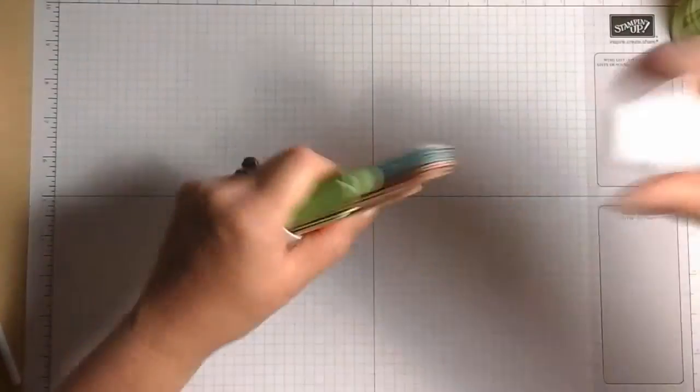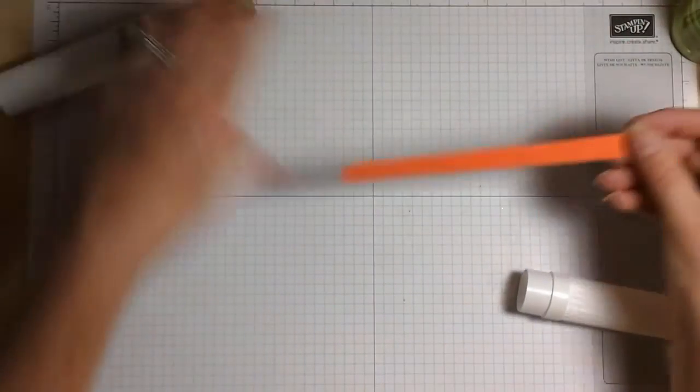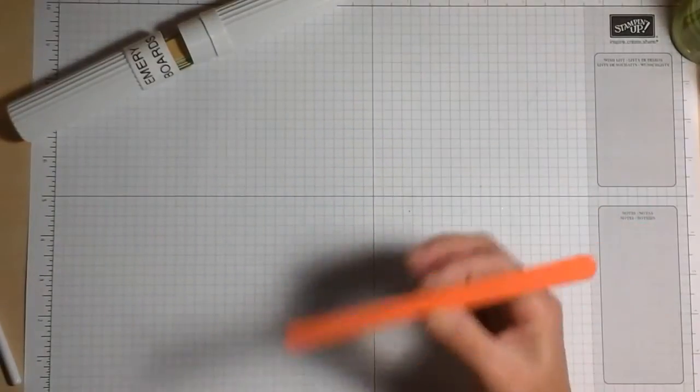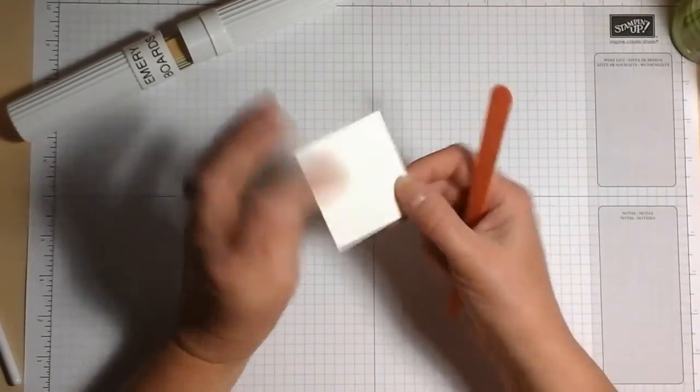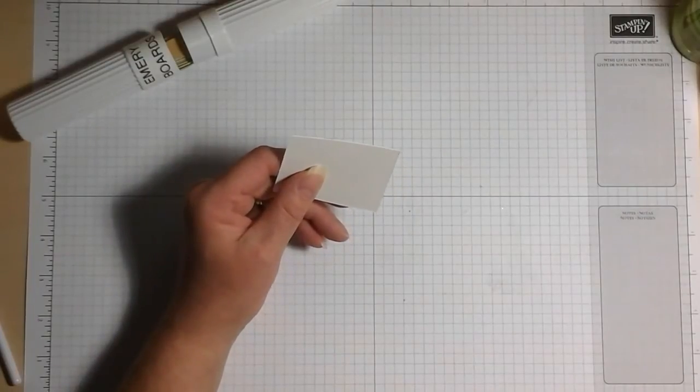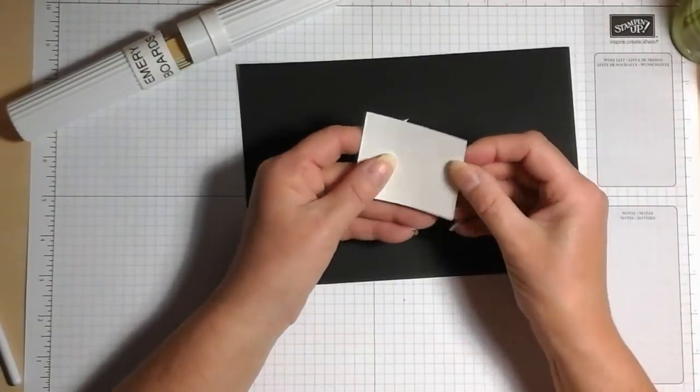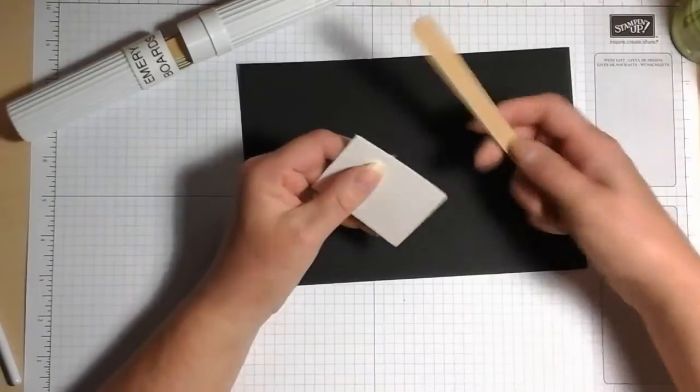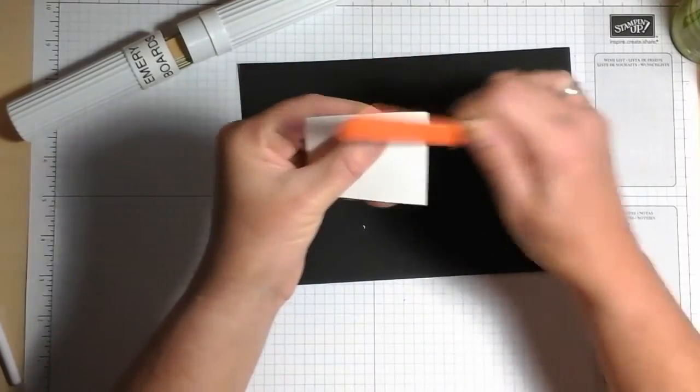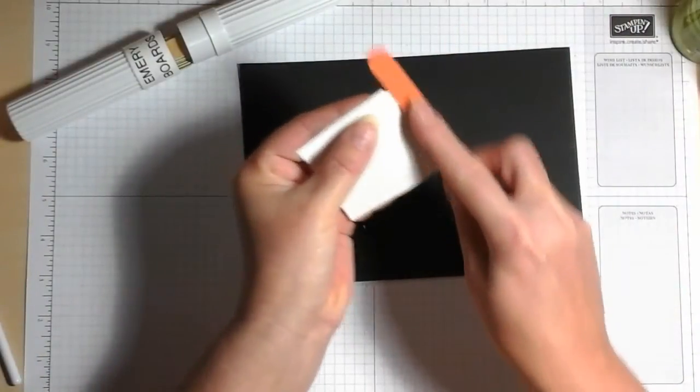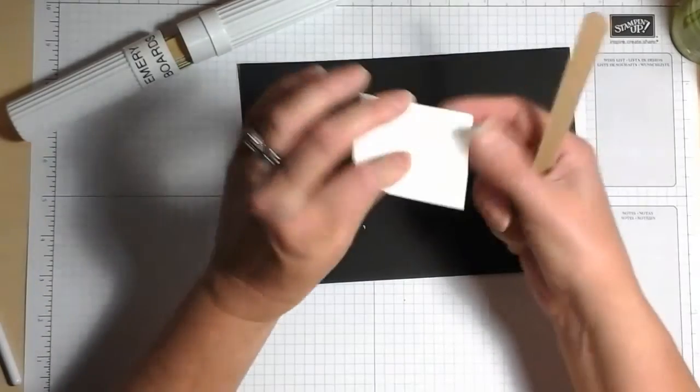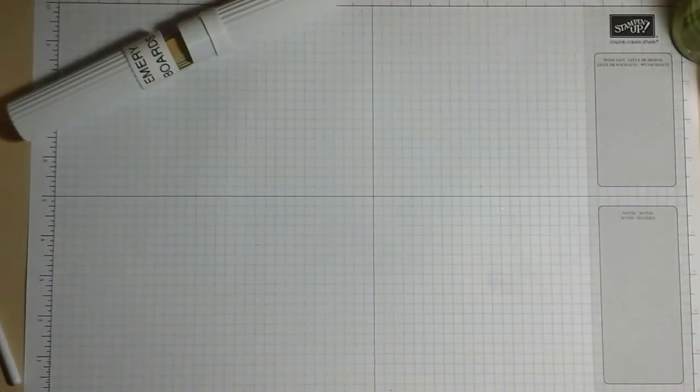Raiding the bathroom drawer, these are emery boards. I happen to keep them in a toothbrush holder just makes it easy so I always know where they are but this emery board is a great thing to have to hand. Sometimes when you're cutting, especially if you're using whisper white which is quite thin and your blade on your stamping trimmer is a little blunt, you can sometimes get these little wispy bits on the edge and the edge can be a little bit rough. All you need to do is take an emery board and you can smooth out the edges of the card very quickly, very easily and you've saved a piece. So that's the emery board.